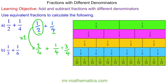For question B, one third plus one sixth. The lowest common multiple of the denominators is six, so we'll multiply this fraction by two to give us two sixths. This fraction already has six as the denominator.